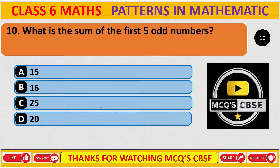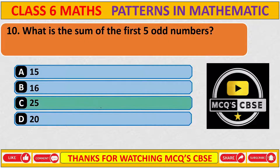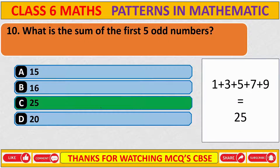What is the sum of the first 5 odd numbers? The correct answer is 25. The first 5 odd numbers are 1, 3, 5, 7, and 9. When we add all these numbers, we get 25. So the correct answer is C: 25.